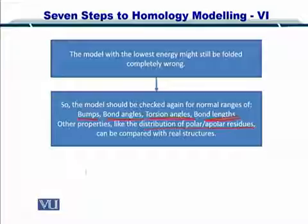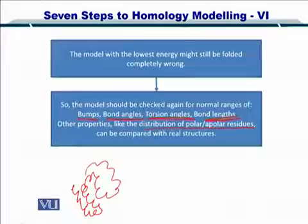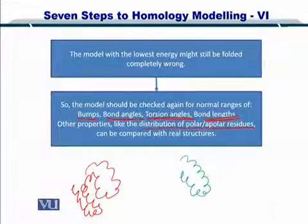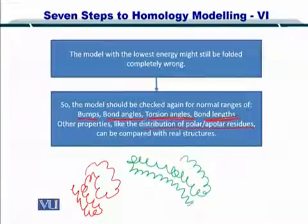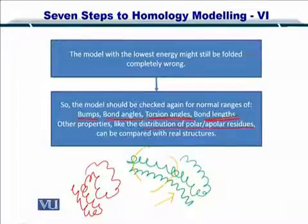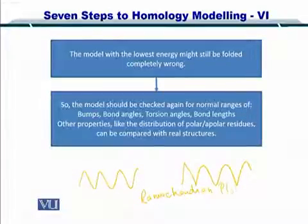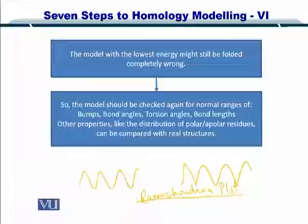For instance, if you have a protein that does not have an obvious bump, that is fine. However, if you have a prediction such that you have helices and then there is a portion in the protein that is protruding out of the main structure, you want to re-evaluate this structure. Also, the bond angles in the backbone should follow the Ramachandran plot. This is called Ramachandran analysis and it is an integral part of protein structure prediction.